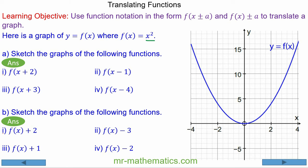In this lesson we're going to translate functions using function notation. We begin with the function f(x) = x squared, which is the parabola in blue, and we're going to translate the function by f(x + 2).